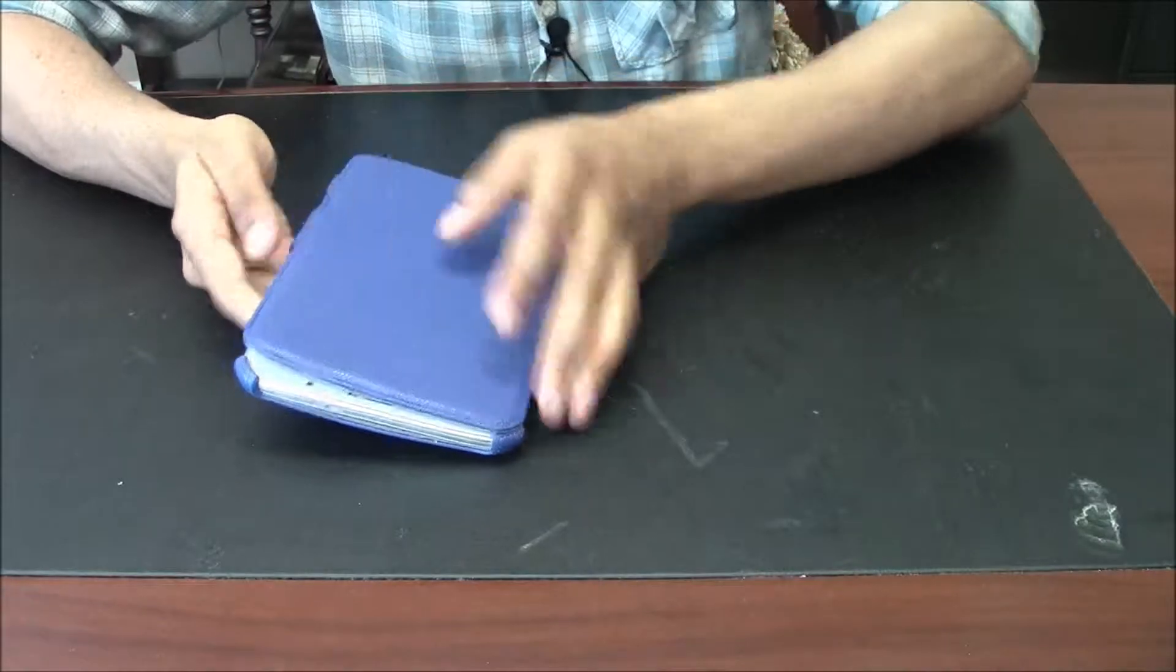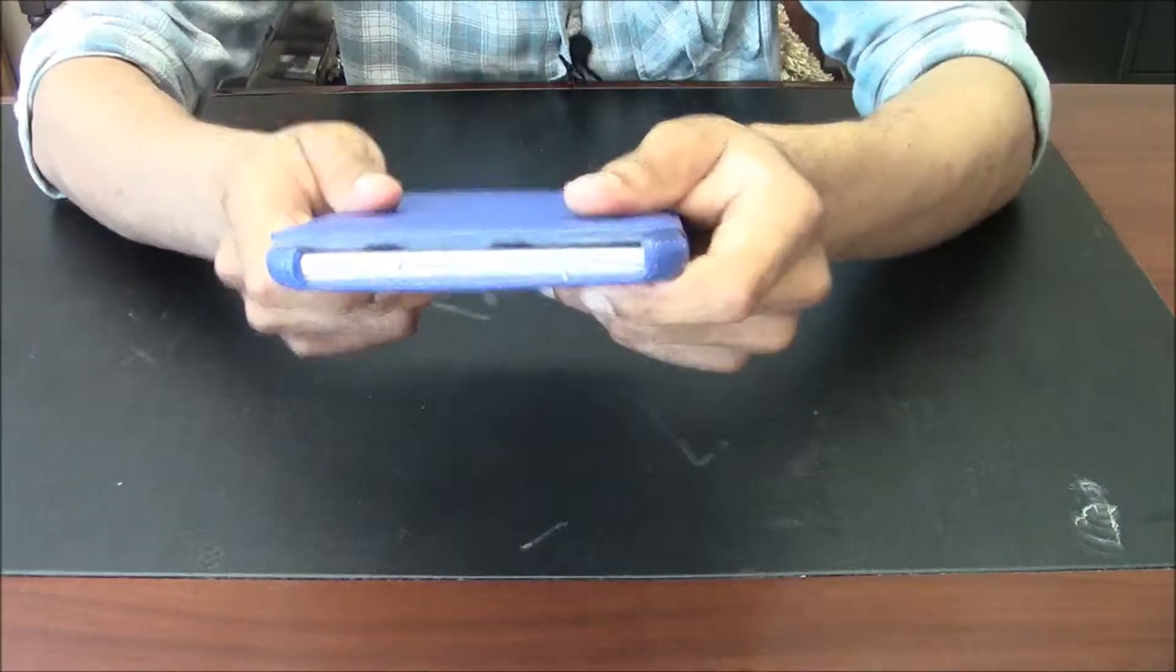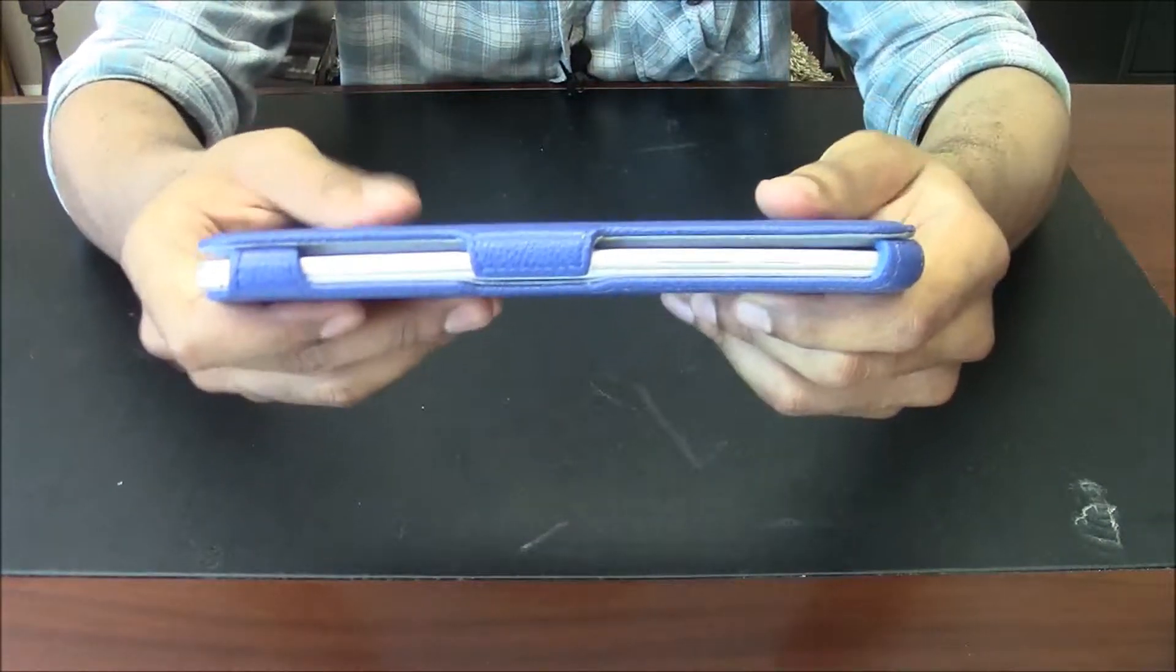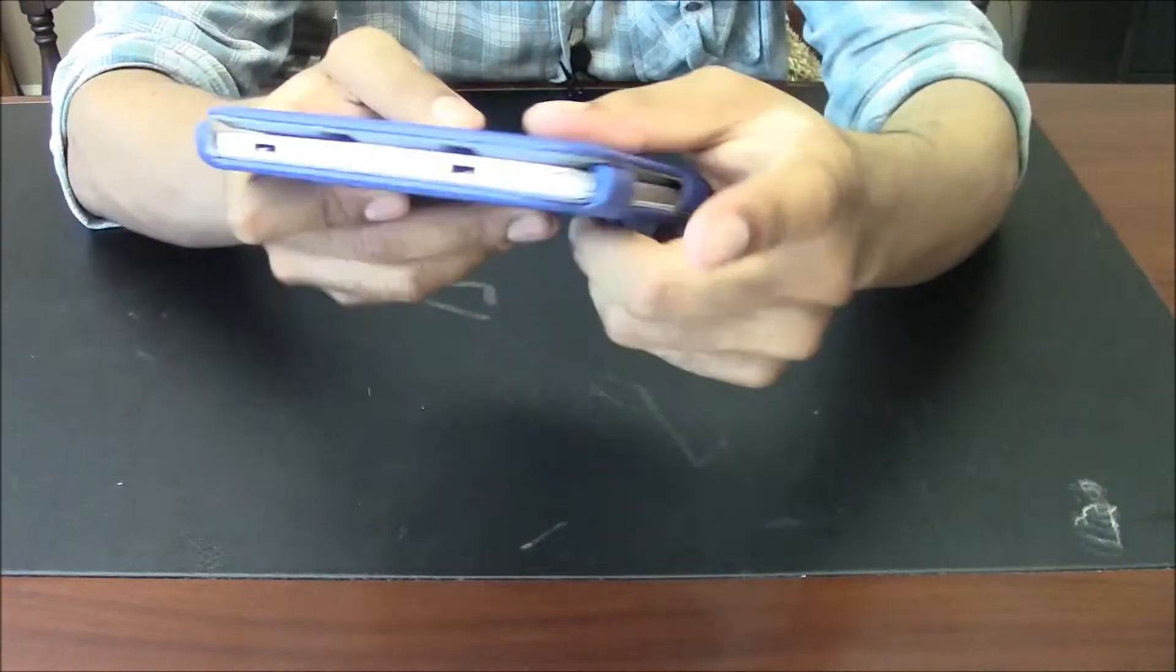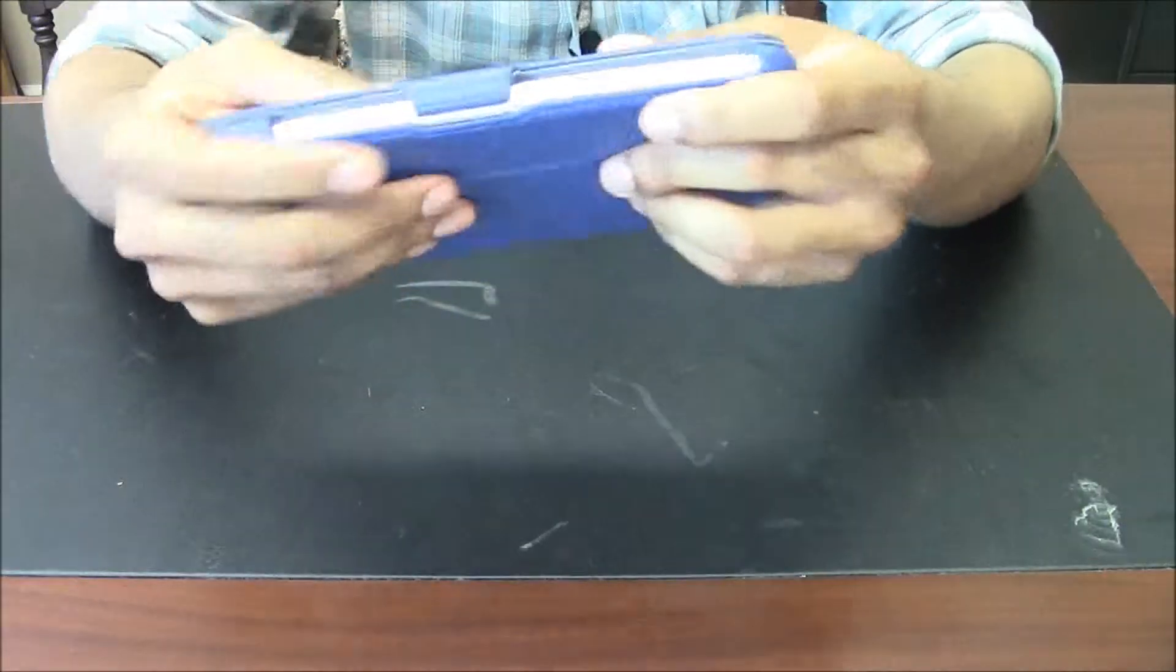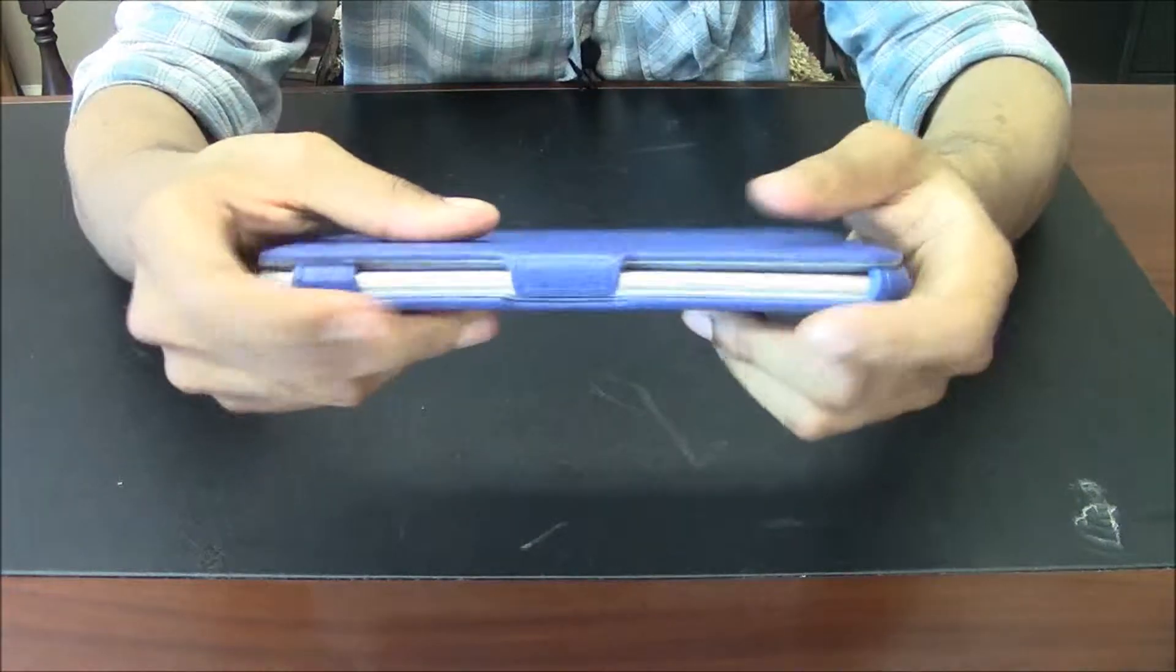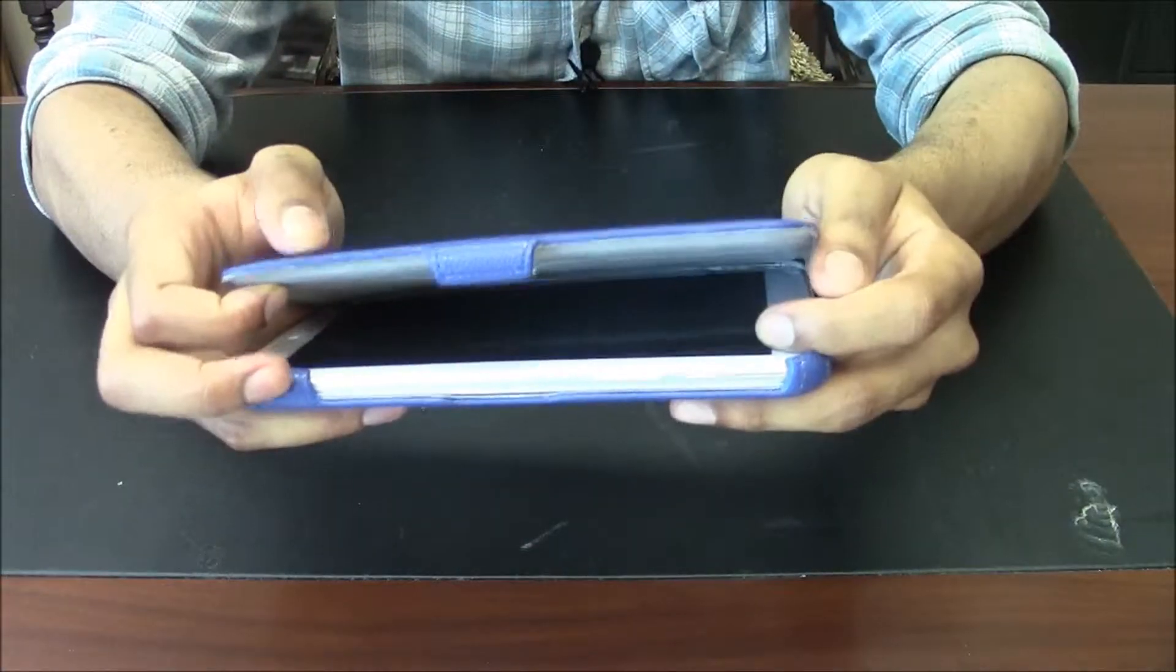Now outside it has all of the ports exposed and you can also pull out your pen if you need to. It has a little latch that holds on to the side of the case that you just pop open.